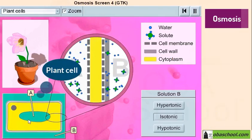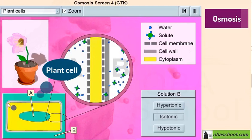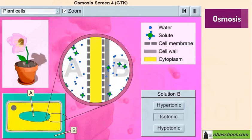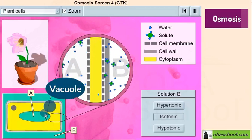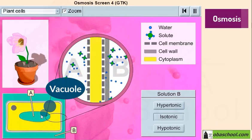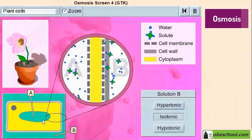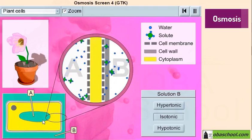This plant cell right here is surrounded by a solution called solution B. And the vacuole of the plant cell is surrounded by another solution called solution A. Remember that in plant cells, beside the cell membrane, we have the cell wall.